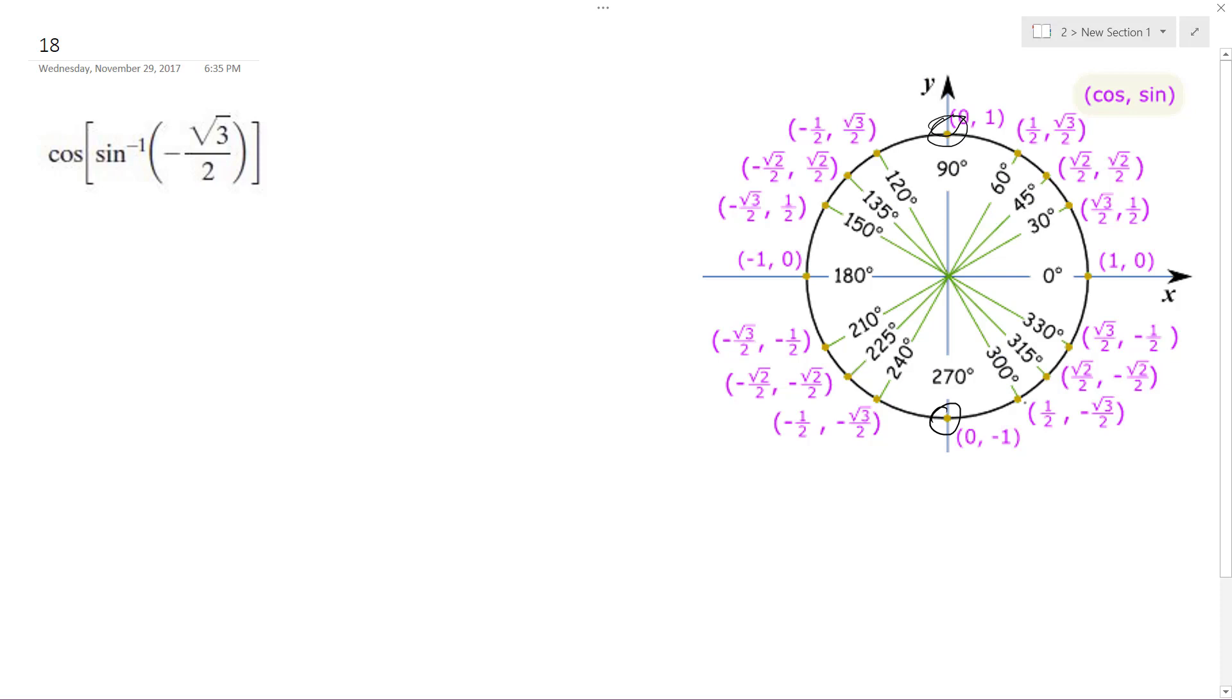And so negative square root of 3 over 2, the y component here, is equal to negative pi over 3.